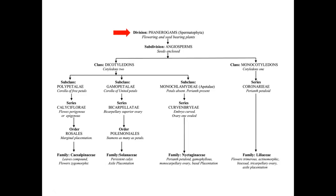Our twig is flowering and seed-bearing, so this goes to Division Phanerogams. The seeds are enclosed in fruit, so subdivision is Angiosperm. There are two cotyledons in the seed, so this goes to Class Dicotyledons. All the petals are free, so the plant goes to Subclass Polypetalae. The flower is perigynous to epigynous, so Series Calyciflorae. Our plant has marginal placentation, so Order Rosales. Leaves are compound and the flower is zygomorphic, so our family is Caesalpiniaceae.